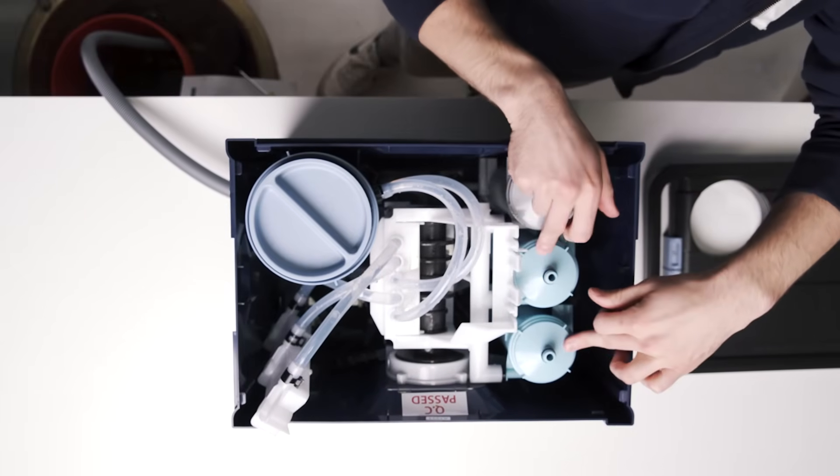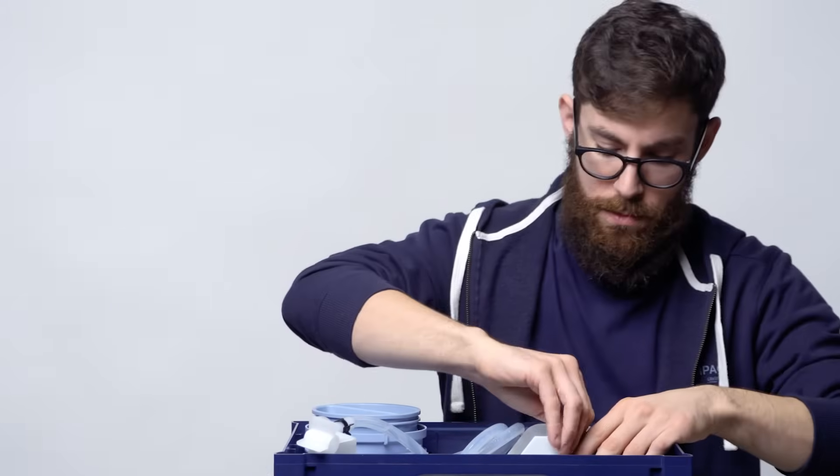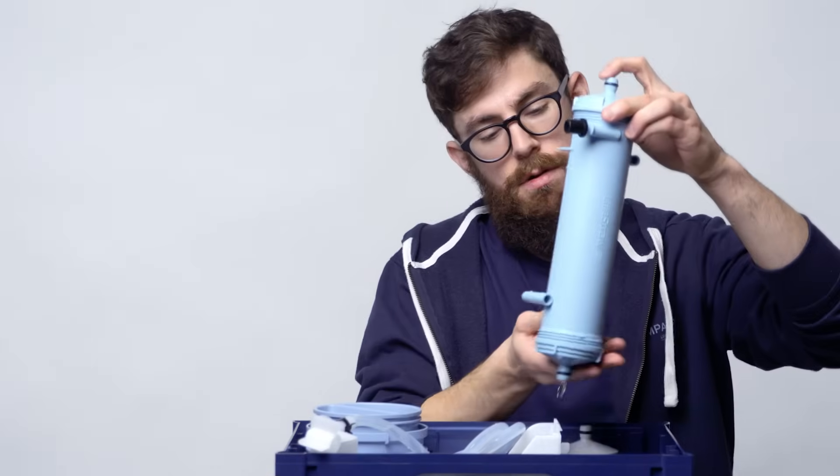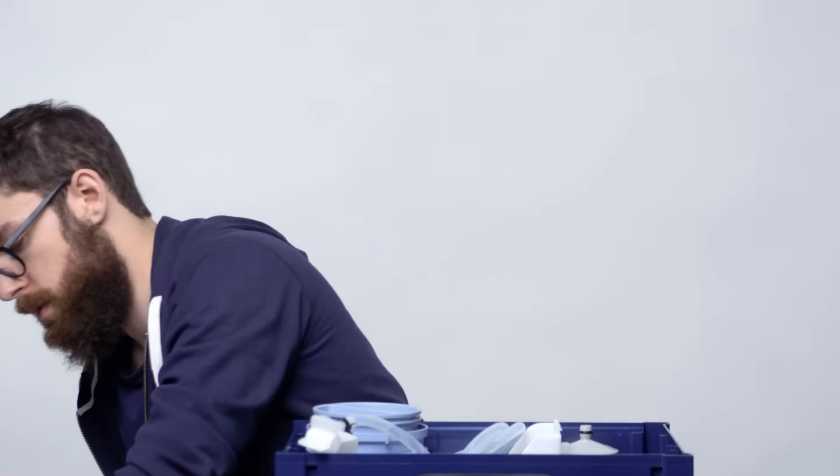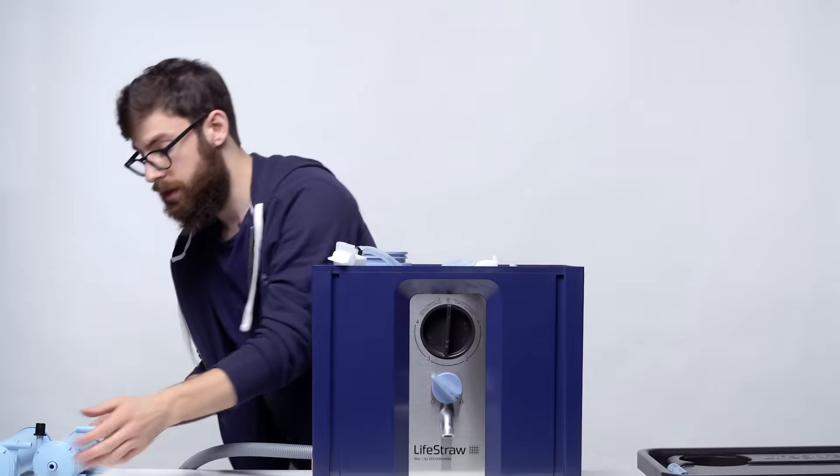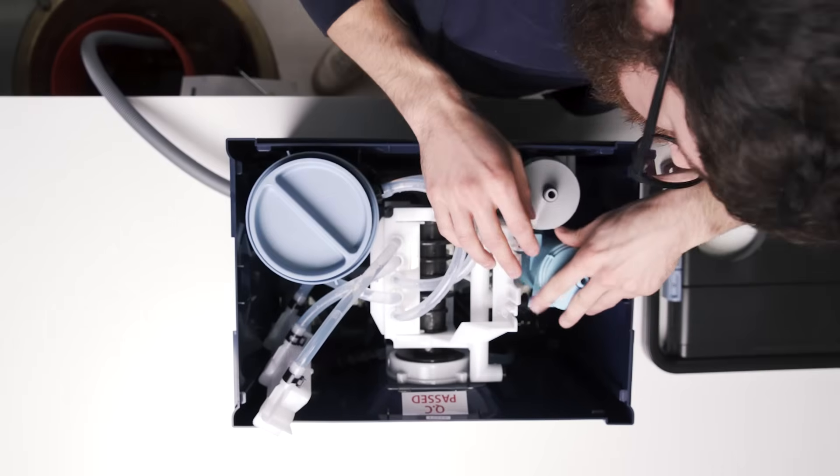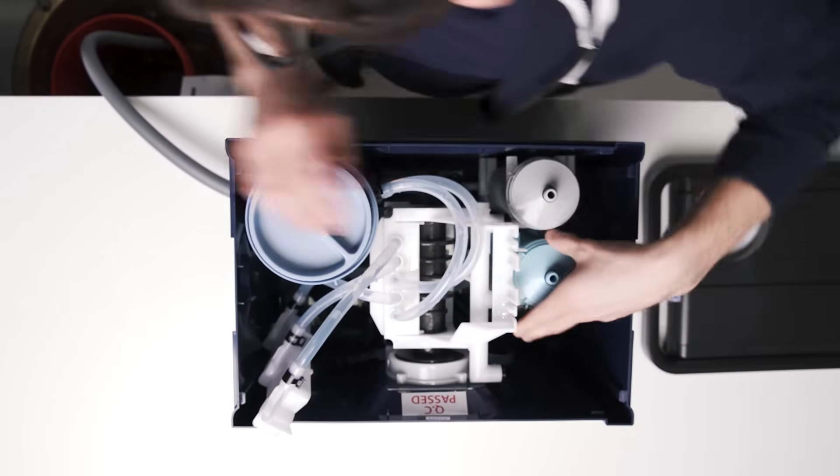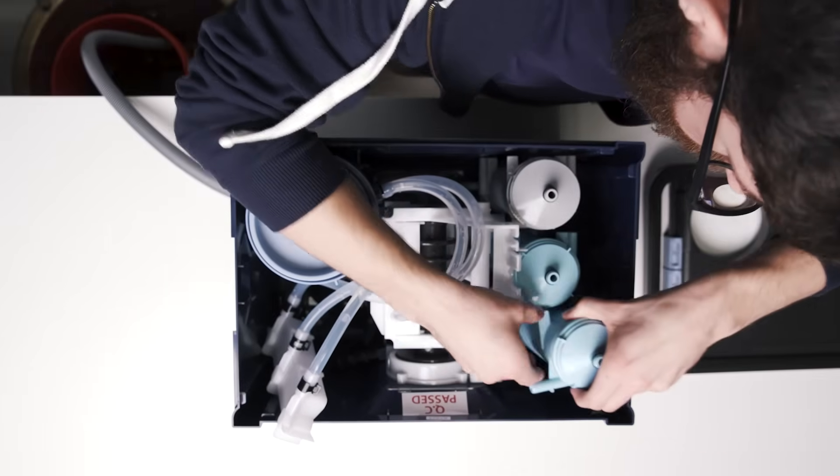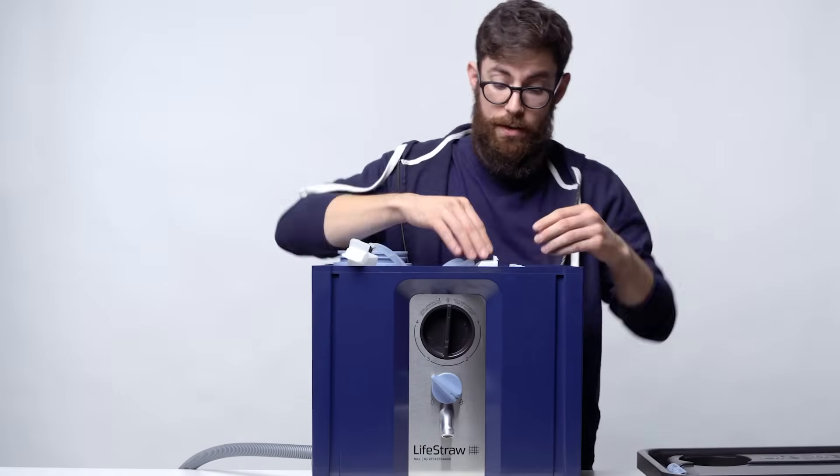First thing we're going to do is show you how to replace your membrane ultra filters. Always replace them as a pair. What you're going to do is slide them out and up. Out and up. And these are both full of contaminants so they can be discarded. When you get your new membrane ultra filters, they're going to go in the exact same way that the other ones came out. Down and in. Make sure they're seated at the bottom and at the top properly. Otherwise, you're going to get some leaks.